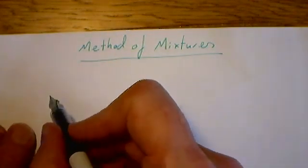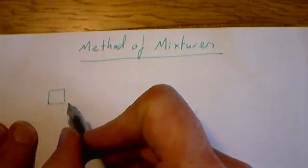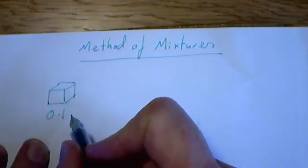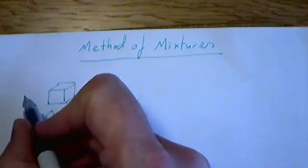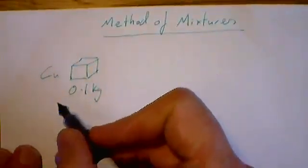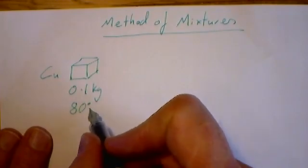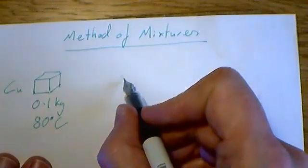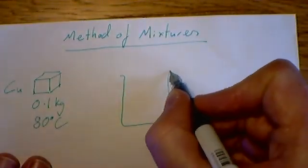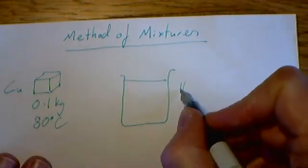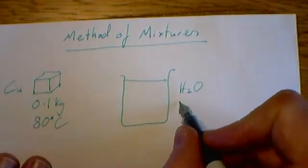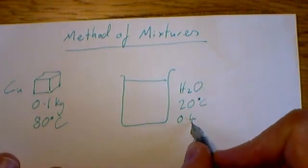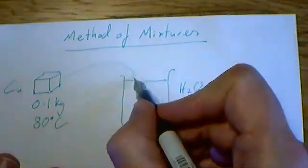For instance, if we had a lump of copper, let's say we've got 100 grams of this, so let's call that 0.1 kilograms. This is our lump of copper. Let's say we've raised this copper up to a temperature of 80 degrees C and we're going to put this copper into some water. Our water is at 20 degrees C and let's say we've got 400 grams of water, so 0.4 kilograms of water. So we're going to pop that into there.